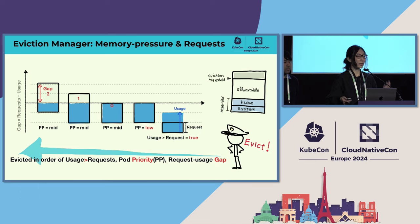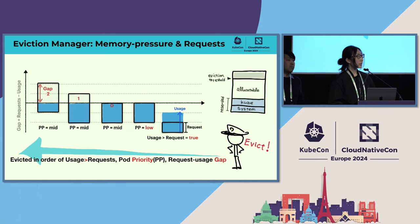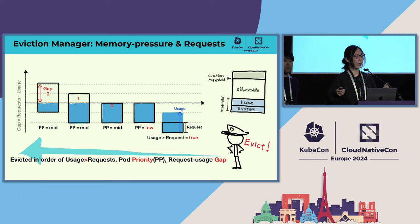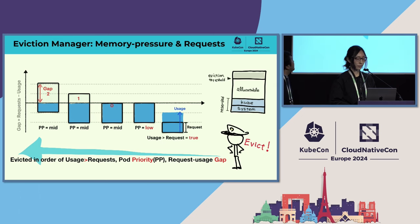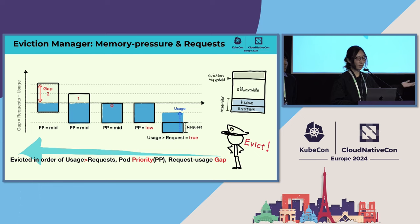How does kubelet decide the order for evicting pods? It depends on request usage and priority. Taking the diagram as an example, kubelet selects pods from right to left. The rightmost pod is evicted first because usage is higher than the request. Then the pod with the lower priority comes next. If priorities are the same, precedence is based on the gap between request and usage. The leftmost pod will be evicted last.